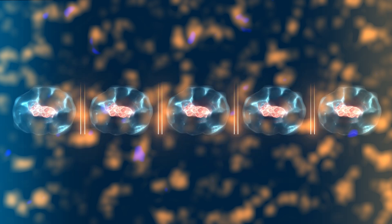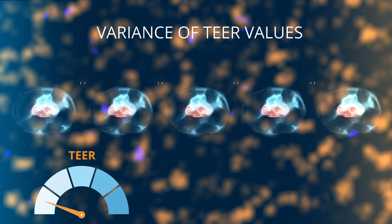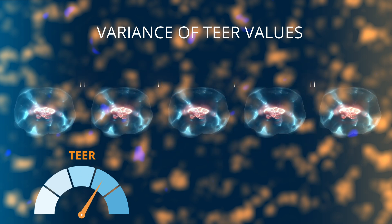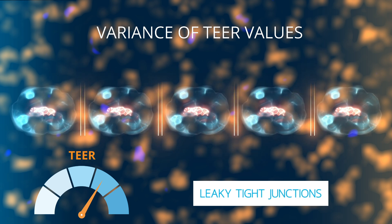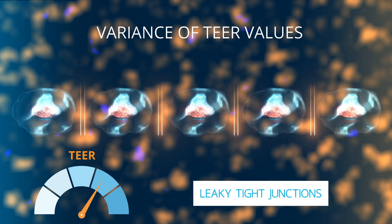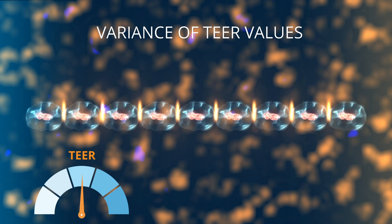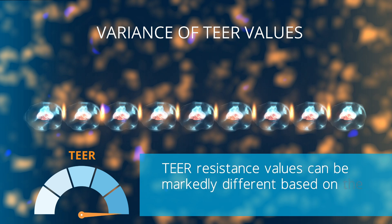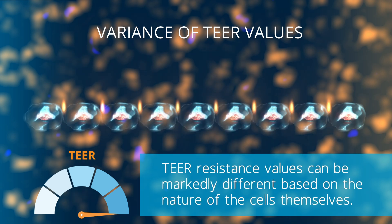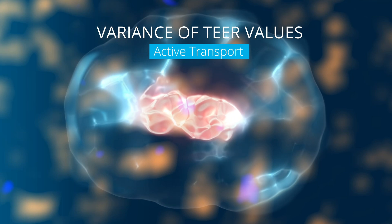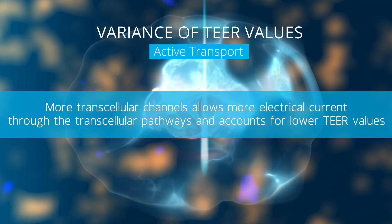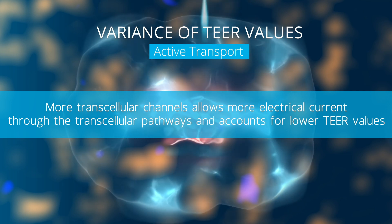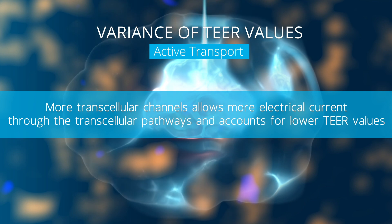TEER values of confluent cellular monolayers can vary depending on the cell type. Monolayers of a certain cell type which normally show low TEER values generally have relatively leaky tight junctions. Monolayers of other cell types show high TEER values, and these cell types are known to have tight junctions. While both monolayers are confluent, the TEER resistance values can be markedly different based on the nature of the cells themselves. The presence of more transcellular ion channels can further allow easier flow of ions through the transcellular pathway, which can additionally lower TEER values.